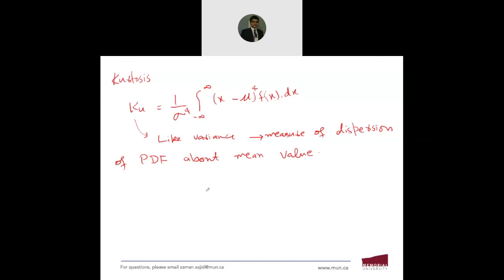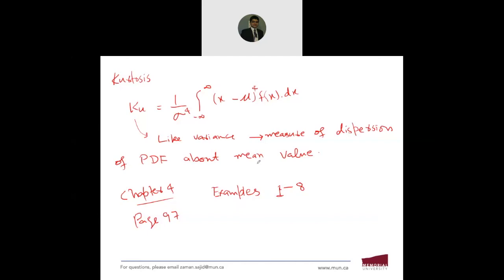For practice at home, go to Chapter 4, page 97 of the Douglas and George book, and attempt examples 1 to 8. When doing these examples, note that the notations may differ from what I used — but there is no fundamental difference. If you have any questions, please ask now.